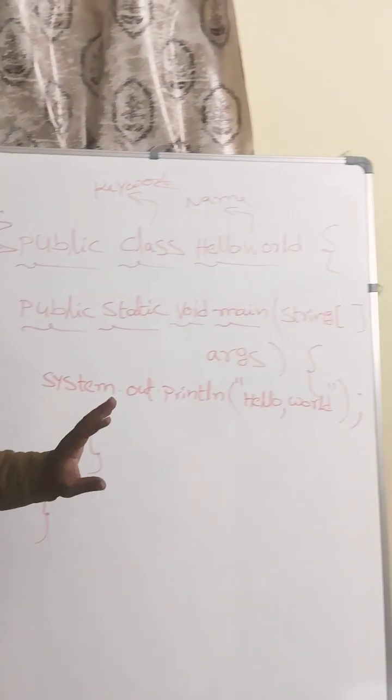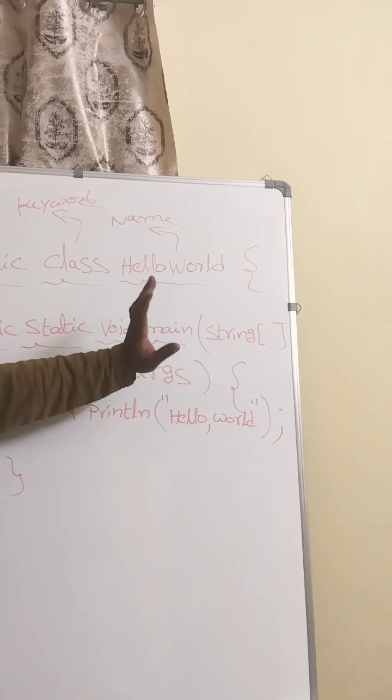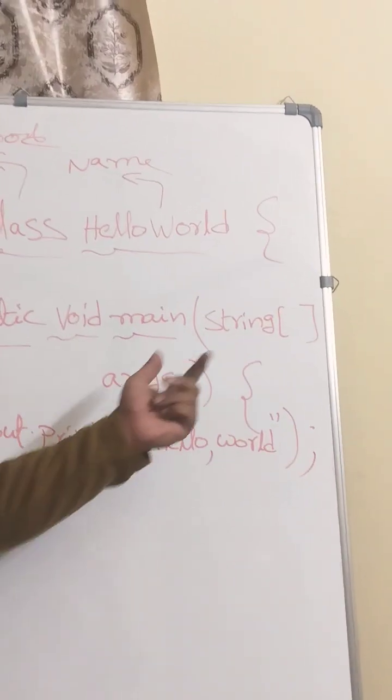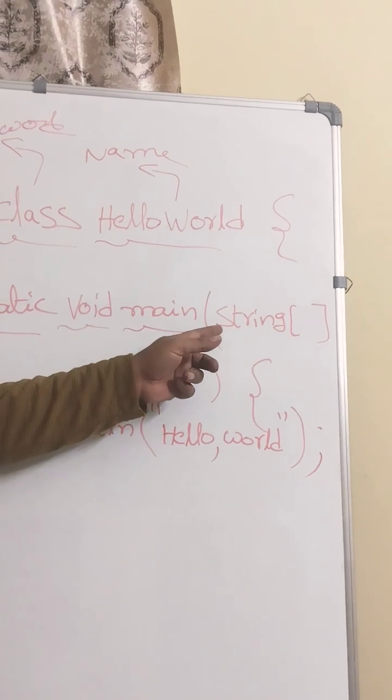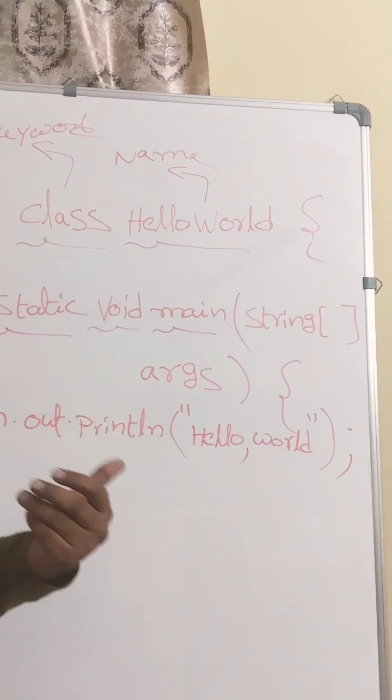Now look at the arguments here. We are specifying String args. That means here we are representing the command line arguments - from the command line we are trying to get the array of strings.